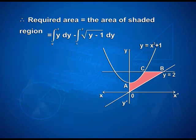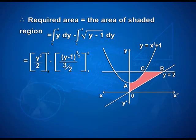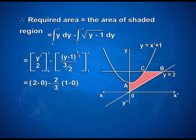Therefore, the required area equals the area of the shaded region, which is: integral from 0 to 2 of y dy, minus integral from 1 to 2 of √(y-1) dy. That equals [y²/2] from 0 to 2 minus [(y-1)^(3/2) / (3/2)] from 1 to 2. On applying limits: 2 - 0 - (2/3)(1 - 0) = 2 - 2/3. Therefore the required area is 4/3 square units.